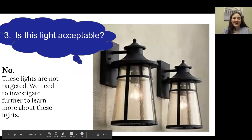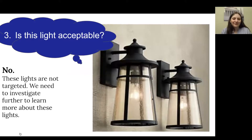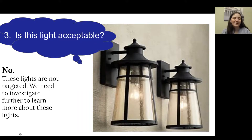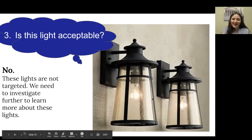Number three: these lights are not acceptable. While they are shielded, those shields are clear, so it's not doing what a non-clear light shield would do. They are not targeted — they are kind of spewing light everywhere. To learn more, we need to investigate, but we can see that they are a warm color temperature.